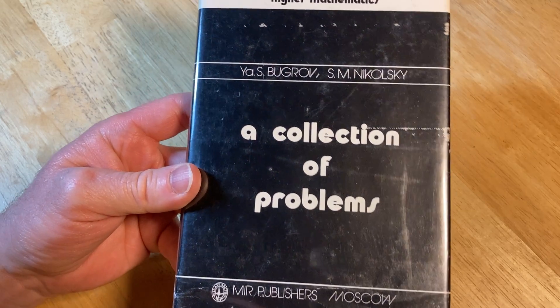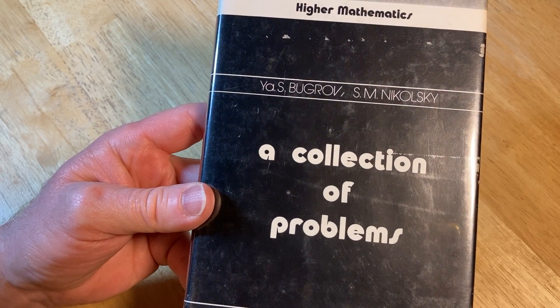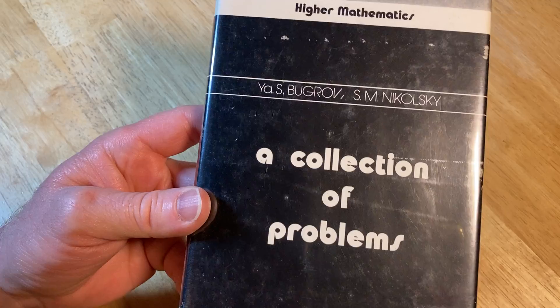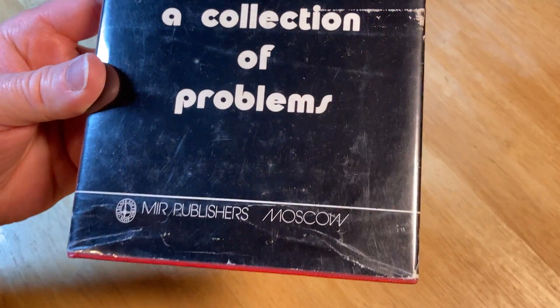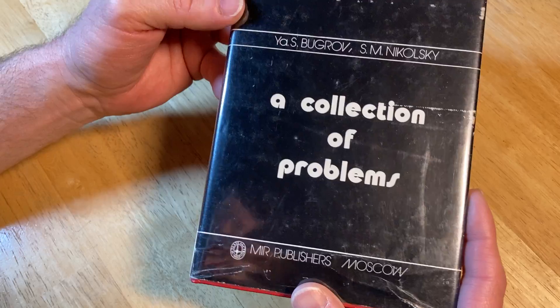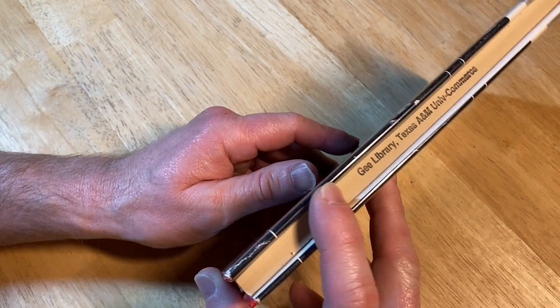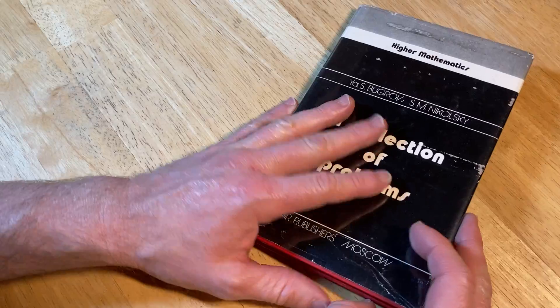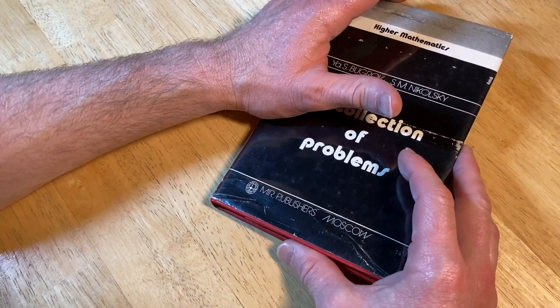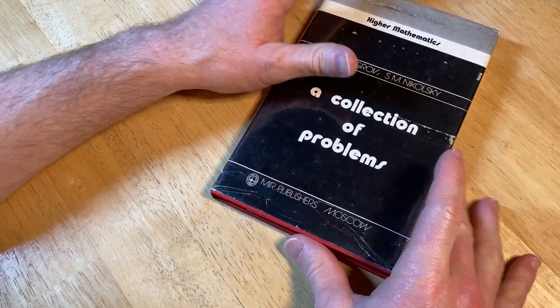A collection of problems by Yaes Bogrov and S.M. Nikolsky, Mir Publishers Moscow. That was a publishing company in the Soviet Union that would take Russian books and translate them to multiple languages and distribute them all over the world. This is one of those books.